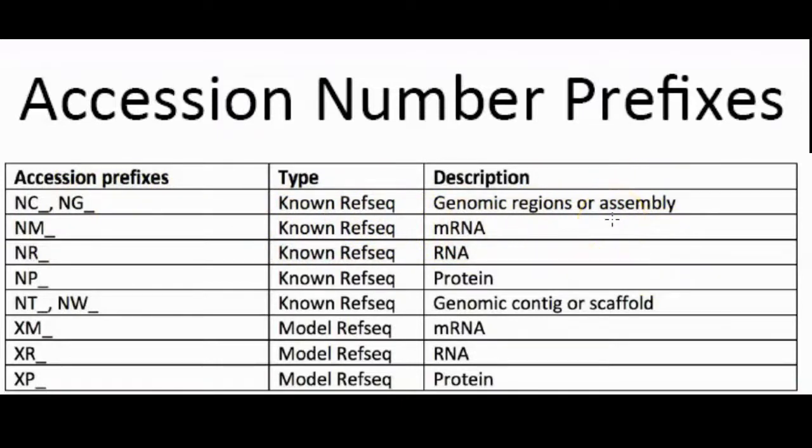If you see NM underscore, this is a messenger RNA sequence. If you see NR, it tells you that there is an RNA sequence. Then NP for protein, and NT_NW for genomic contig or scaffold.